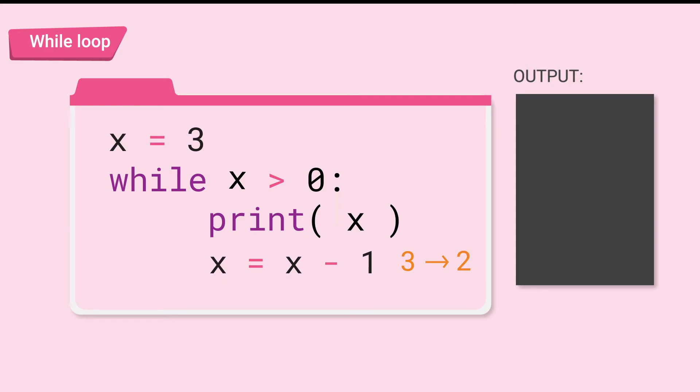So what is the output? Let's trace the code line by line and figure this out. At the bottom, I'm going to create a table to keep track of the x value. Line 1, x is 3.